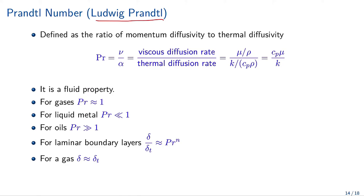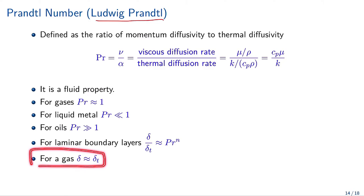For gases, Prandtl is approximately equal to 1. For liquid metals, Prandtl is less than 1. For oils, Prandtl is much greater than 1. For laminar boundary layers, the ratio of the velocity boundary layer thickness delta to the thermal boundary layer delta_T is approximately Prandtl to the power n. For gases, since Pr≈1, delta ≈ delta_T, which greatly simplifies analysis.